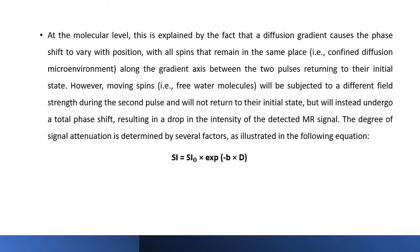The degree of signal attenuation is determined by several factors, as you can see in the equation below. The signal attenuation is equal to the initial signal attenuation multiplied by exponential minus B multiplied by D.